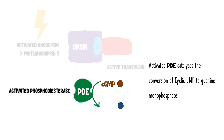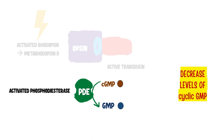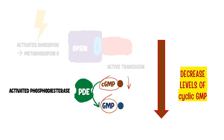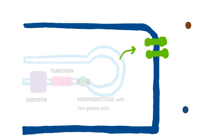The function of activated phosphodiesterase is to convert cyclic GMP to normal GMP. As phosphodiesterase becomes activated, all cyclic GMP is converted to GMP, so cyclic GMP concentration falls. This decrease in cyclic GMP levels is very important, which becomes clear when we introduce the next character — the sodium channels.